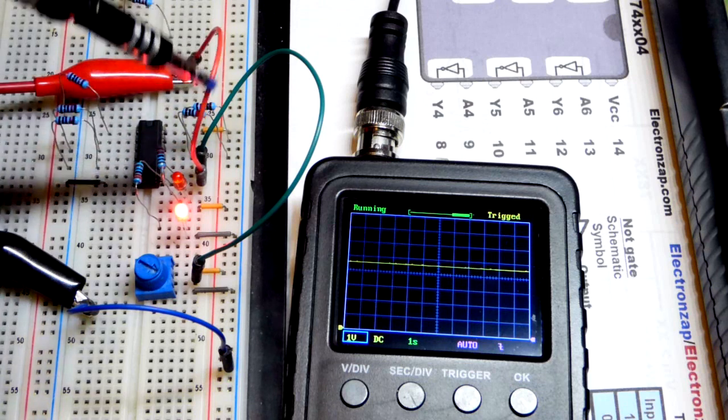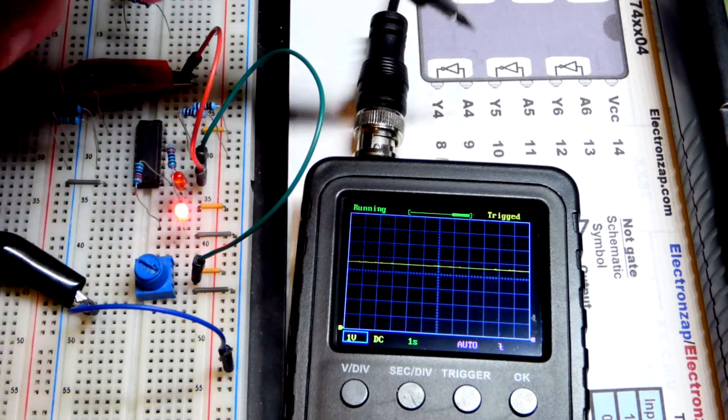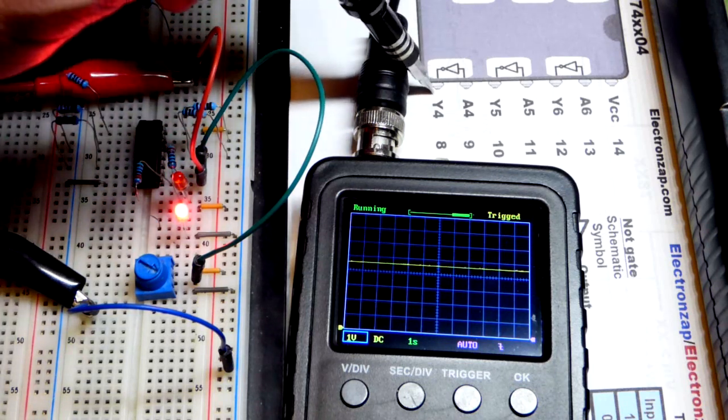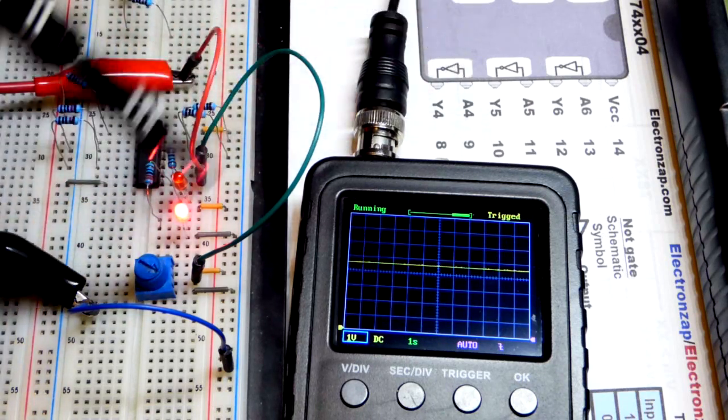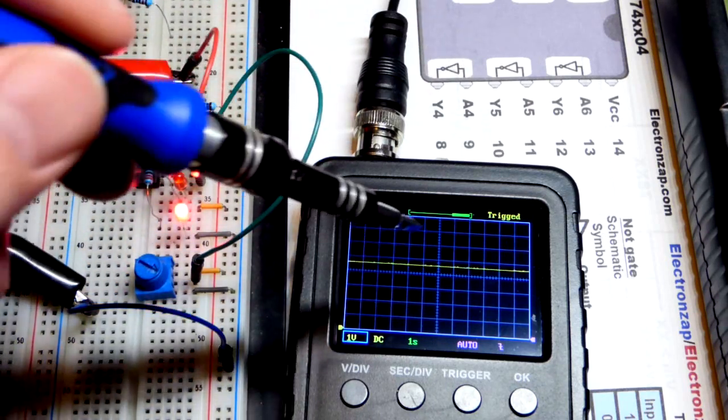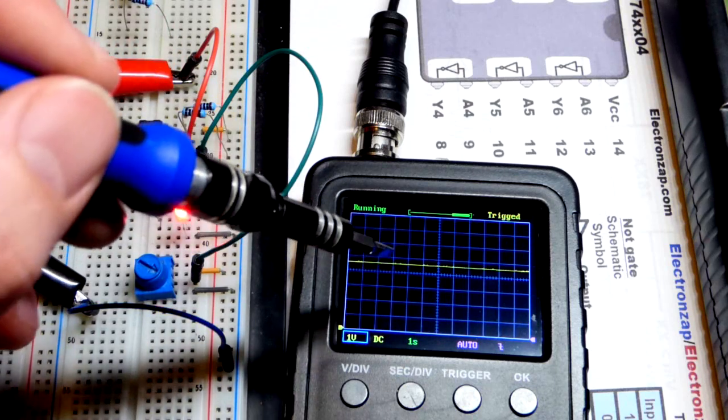We have the red alligator clip and that comes to the output of this integrated circuit. So the bottom pin right there. And the input is this green wire right there. And there you can see the output is high right now.